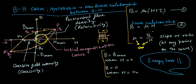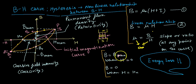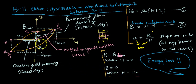To summarize: B = Br (retentivity) when H = 0, meaning the material retains magnetization with no applied field. And B = 0 when H = Hc, which is called coercivity — the field needed to demagnetize the material.